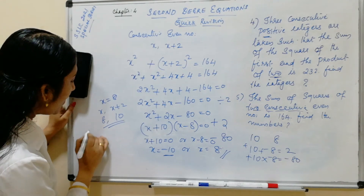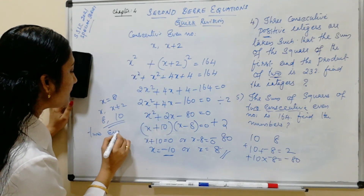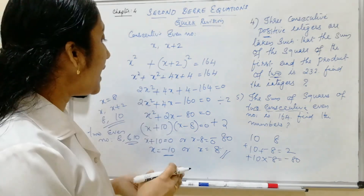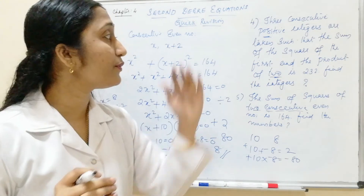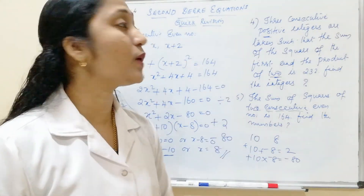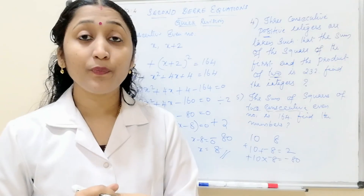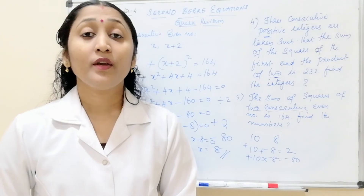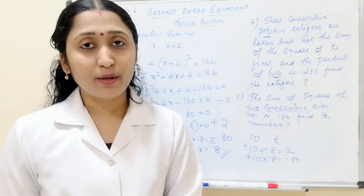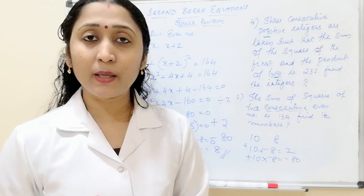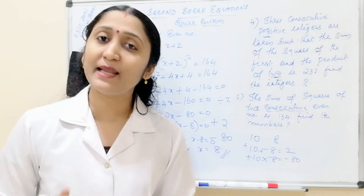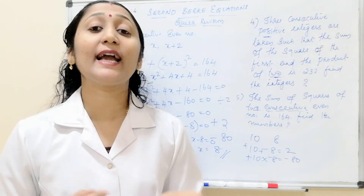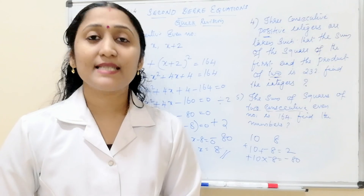So the 2 even numbers are 8 and 10. This is the answer for problems 4 and 5. I hope you all understood these problems on second degree equations. If you need any chapter, please comment in the comment box. If you like my video, like and share it with your friends. If you are new to my channel, please subscribe and hit the bell icon so you get notifications. Thank you so much for watching. See you in my next video. Bye.